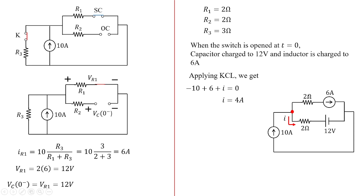With 6 amperes outgoing, 4 amperes outgoing, and 10 amperes incoming, KCL is balanced. The voltage across the 2 ohm R1 is 12 volts. With 4 amperes flowing through R2 of 2 ohms, we get 8 volts drop across that resistor.